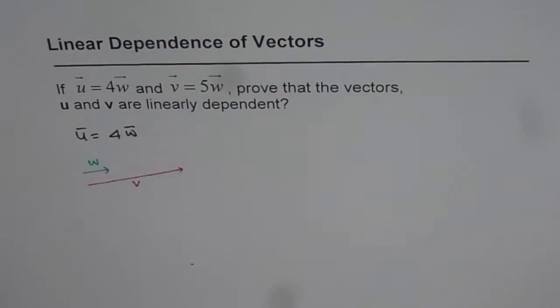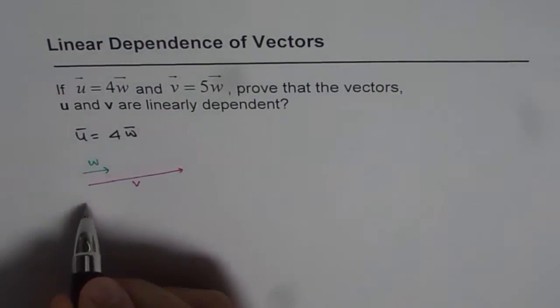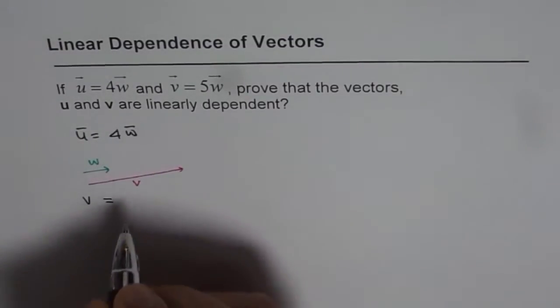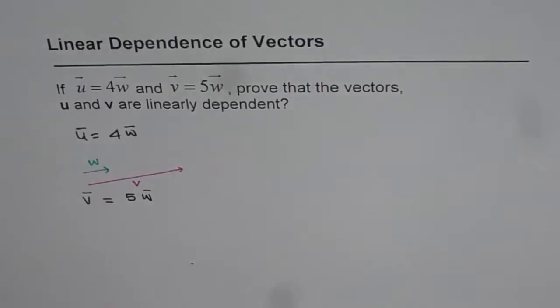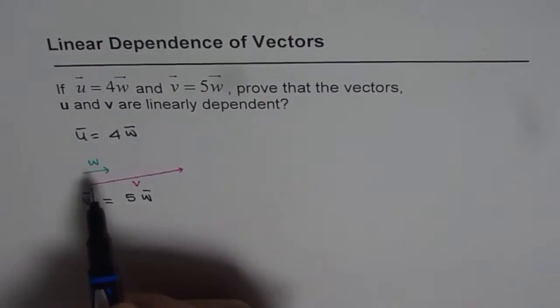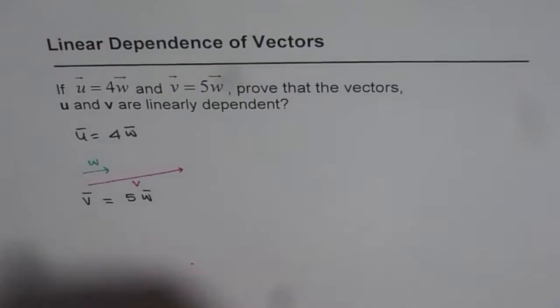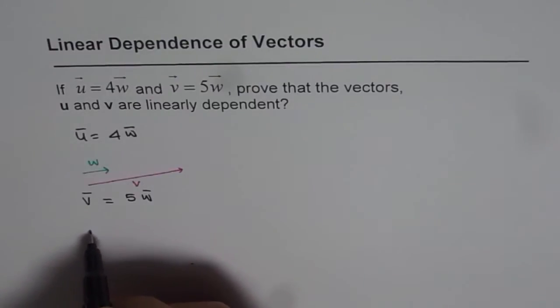And we are also given that v equals 5 times w. For the given vector w, which is shown here in green, v will be 5 times.